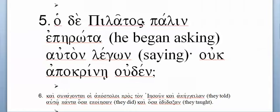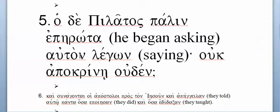Then you have your subject with ὁ Πιλᾶτος, which is Pilate, of course. So, 'and Pilate' — Πιλᾶτος you should know. He gives you the verb here: 'began asking,' and then 'began asking him.' That tells you this is accusative, and that -ν ending should be your giveaway that it is accusative singular.